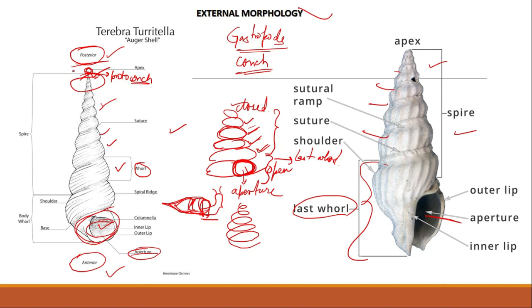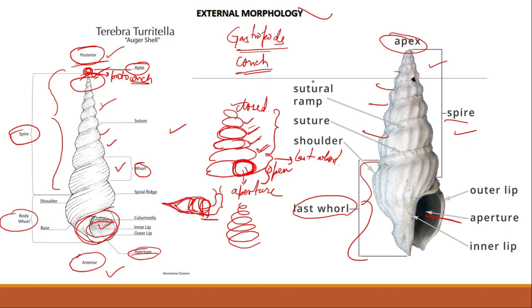Except the body whorl (also called the last whorl), all the other whorls together are known as the spire. The terminal whorl of the spire forms the apex. The terminal whorl of the spire — this is known as the apex.